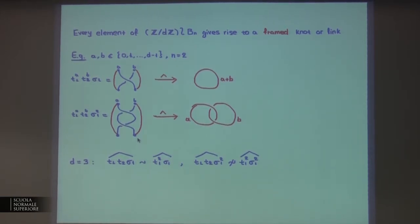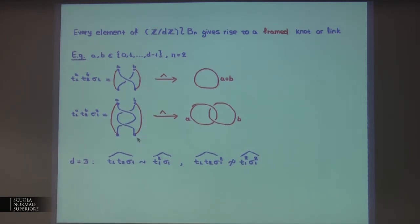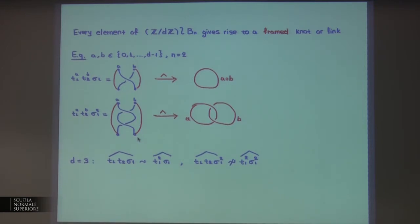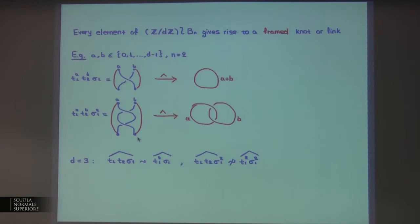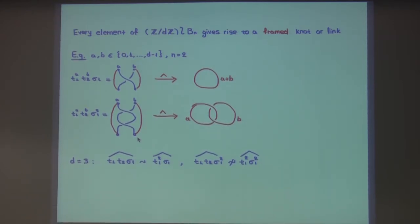To continue: in the example, the thing about framings is that if we take a equal to 1 and b equal to 1, or take a equal to 2 and b equal to 0, we don't care — these things will be equivalent because at the end we get the unknot with framing 2. But in the second case, taking a equal to b equal to 1 is different from taking a equal to 2 and b equal to 0 — you get two different framed knots and links.